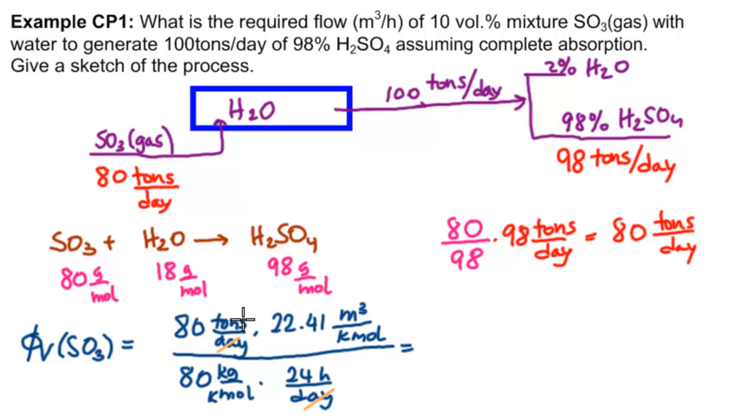Let's see what cancels. Days cancel. We'll need to multiply by 10 to the third to cancel that. Kilomoles with kilomoles, and we have hours. So we need 80 times 10 to the third over 80, then times 22.41 divided by 24 gives us 933.8 meters cubed per hour of SO3.